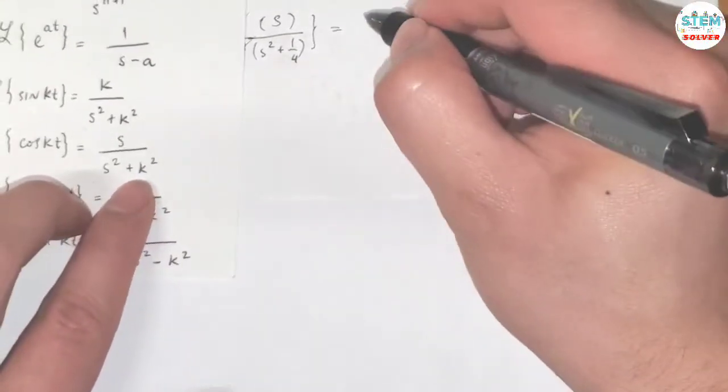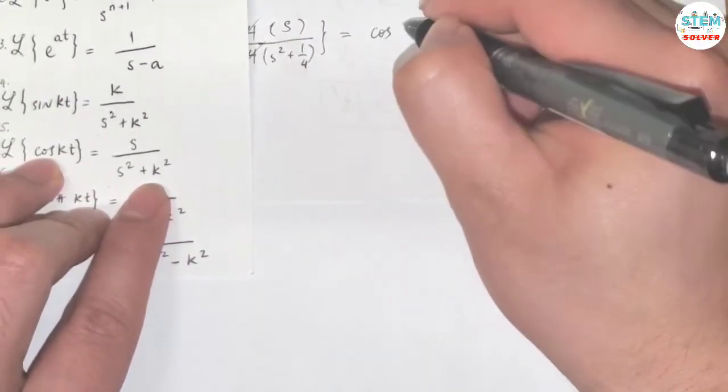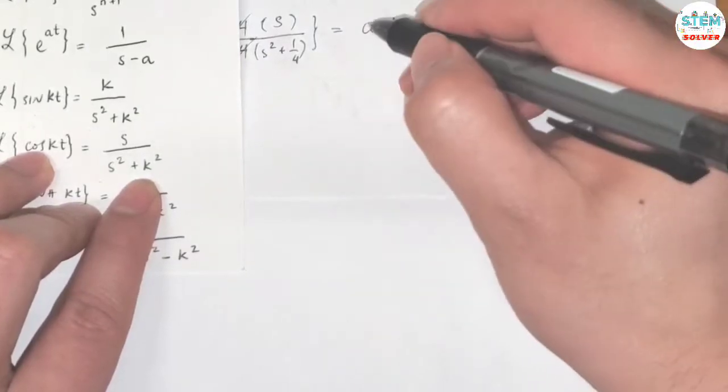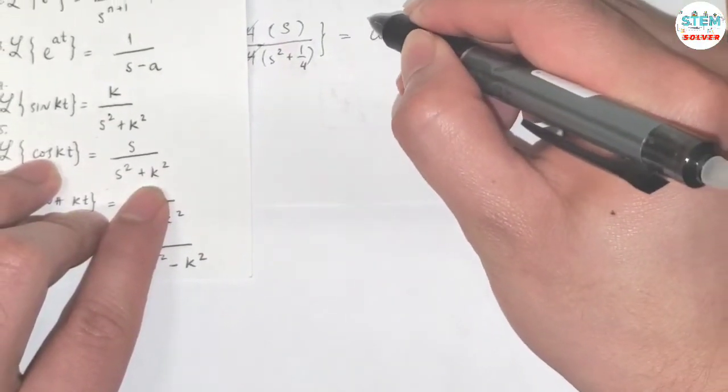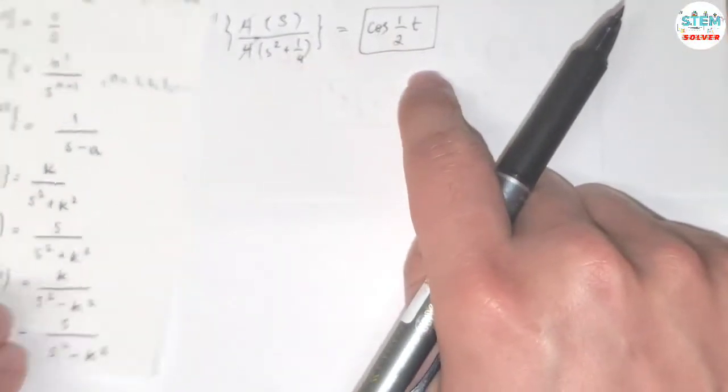So the inverse of this is going to be cosine of 1 half t. So this is your final answer.